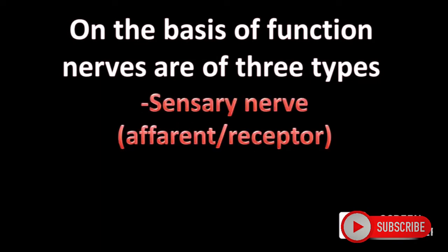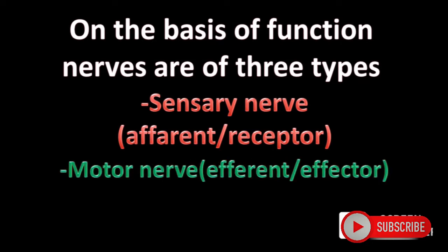On the basis of function, nerves are of three types: sensory nerve (afferent or receptor), motor nerve (efferent or effector), and mixed nerve.